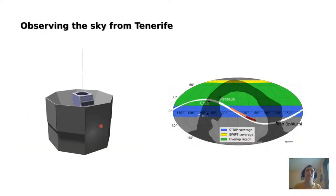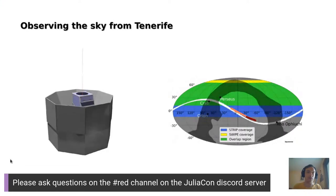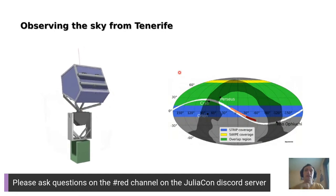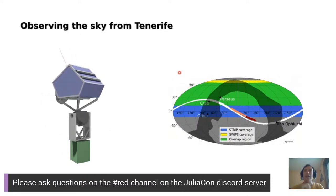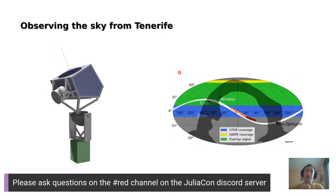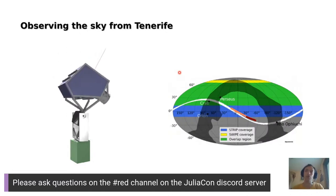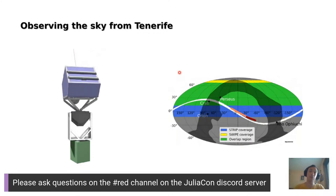Observing one-third of the sky requires a well-thought-out scanning strategy. The telescope will make the instrument point at some constant elevation angle, then spin regularly day and night around the zenith for the whole mission time, which is nominally two years. This motion, combined with the daily rotation of the Earth as observed in Tenerife, will make Strip cover a stripe in the northern sky — roughly one-third of the sky, shown in green and blue in equatorial coordinates.